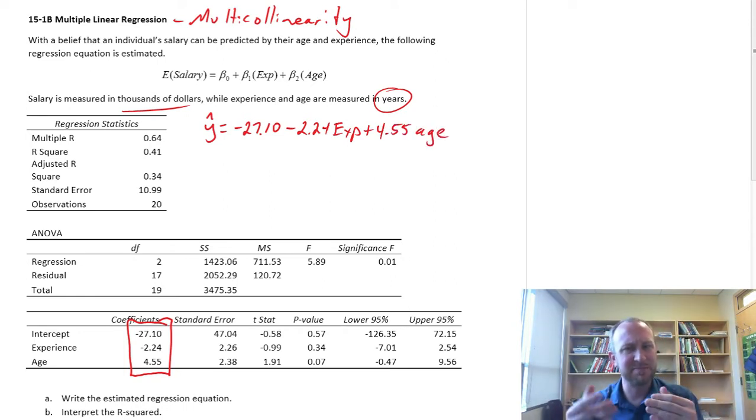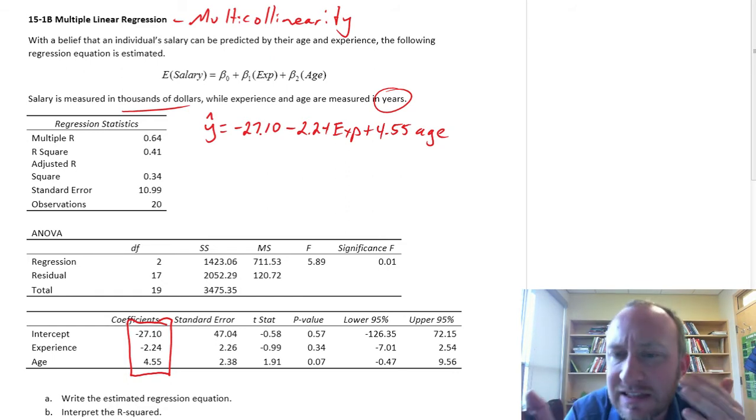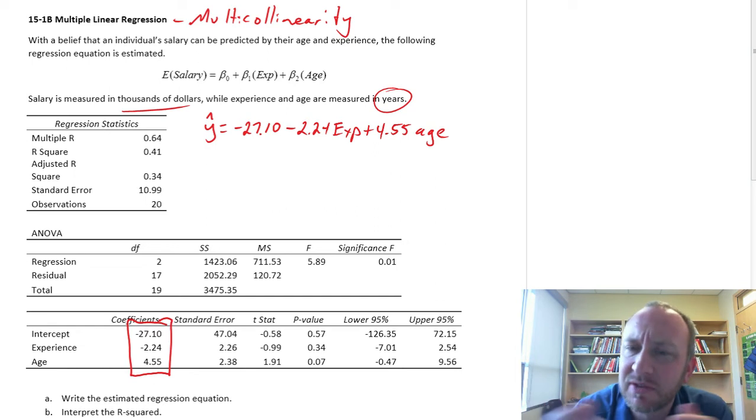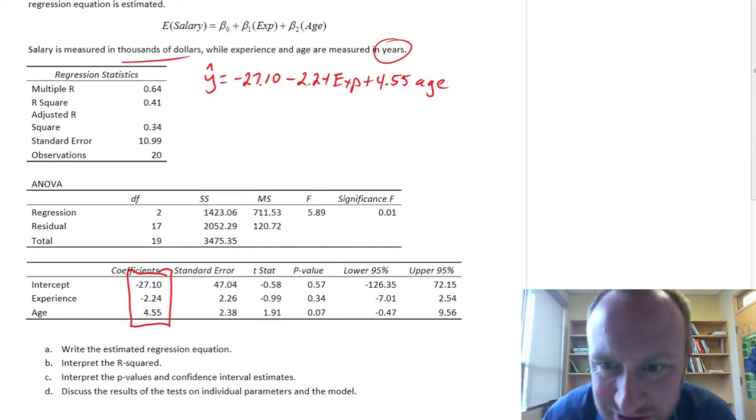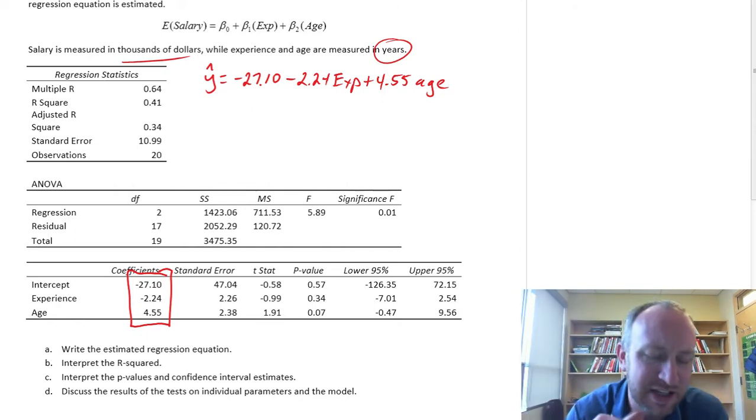So we have a negative 27.1 minus 2.24 experience plus 4.55 age. So that might be a weird result as well. At least it's counterintuitive that there's a negative coefficient on experience. So what this is saying is that as my experience increases, that has a negative effect on my salary. That's not very motivational, is it? As I get older, however, that's a positive relationship. As I get older, my age has a positive effect on my salary. Well, that kind of makes sense, I suppose.